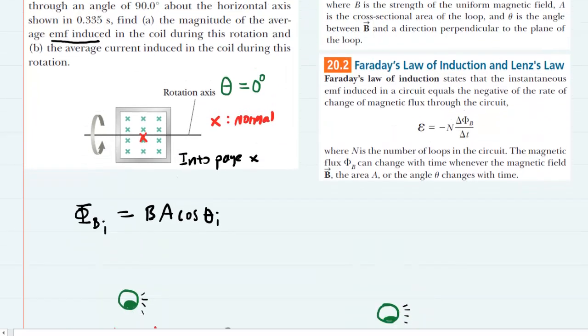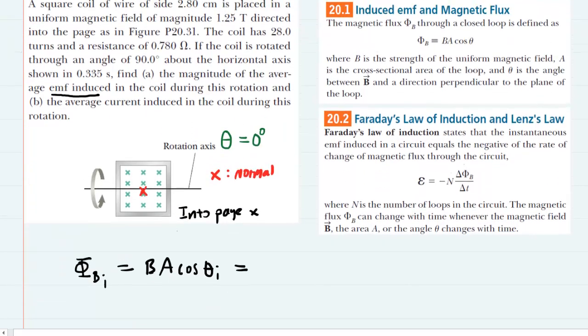That will be our expression for the initial magnetic flux. We can go ahead and plug in the values because we have everything we need. The magnetic field was 1.25 tesla. The area will be the area of a square, so you take one side and multiply it by the length of the other side. Here we have 2.8 centimeters. Just remember to convert that into meters. So you'll have 2.8 times 10 to the minus two meters. We converted it into meters by multiplying by 10 to the negative two. Then you'll square that because to find the area of a square, you square the side length, multiplied by the cosine of zero degrees.